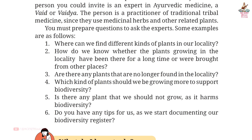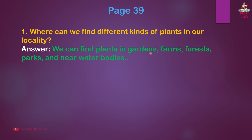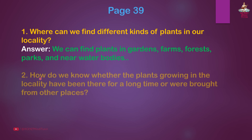Question 1: Where can we find different kinds of plants in our locality? Answer: We can find plants in gardens, farms, forests, and near water bodies. Question 2: How do we know whether the plants growing in the locality have been there for a long time or were brought from other places?